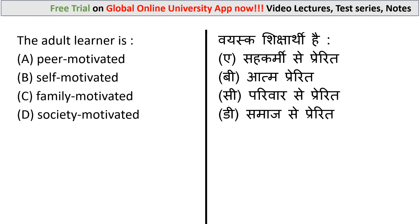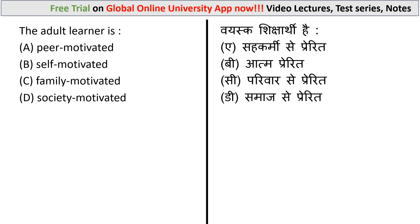Next question: the adult learner is — the options are: (a) peer motivated, (b) self-motivated, (c) family motivated, and (d) society motivated. Adult learners come from diverse cultural backgrounds with adult responsibilities and job experience. They typically study part-time simultaneously with work and family responsibilities. Neither peers, family, nor society primarily influences their learning. They are self-motivated, self-directed, and practical. The correct answer is option B: the adult learner is self-motivated.